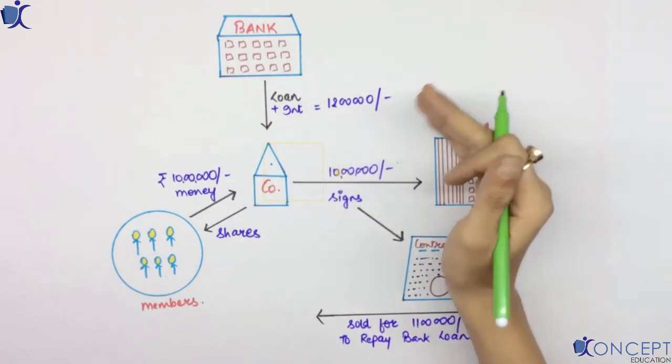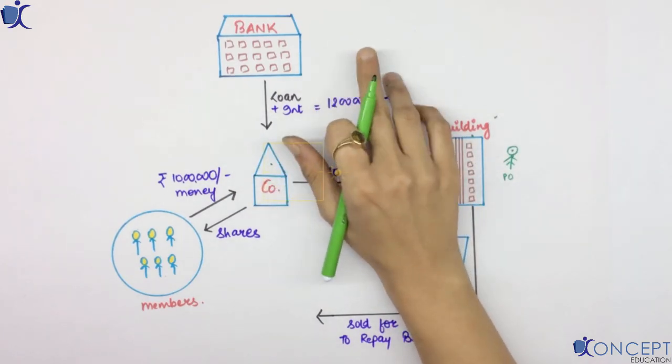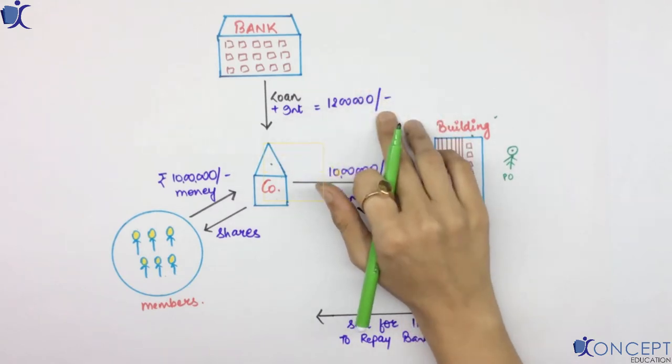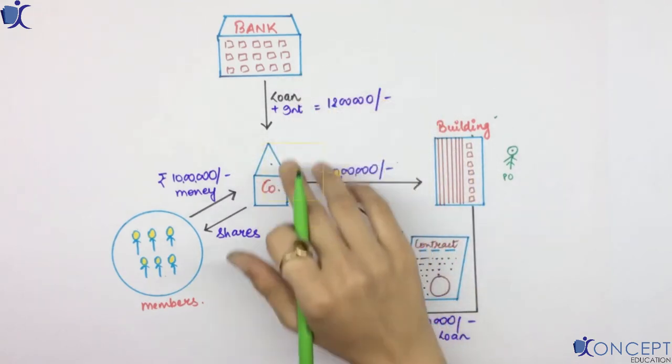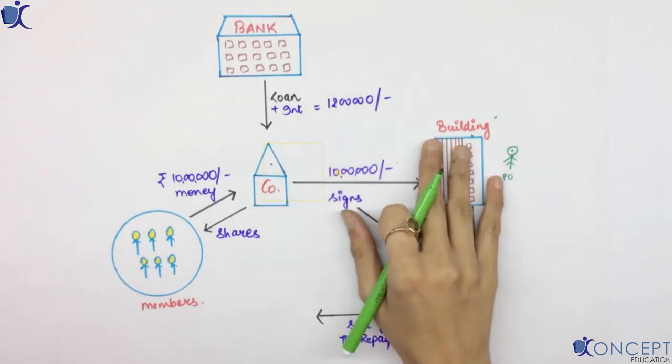The company was not able to repay the loan to the bank. The bank loan was 9 lakh rupees, but it was 12 lakh rupees with interest. And the bank asks the company to repay the loan. The company is like, I don't have any funds to repay you.